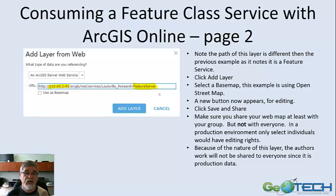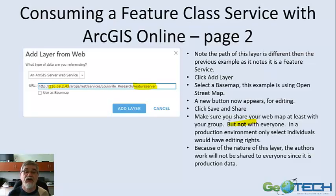Some things to do: click to add layers, select a base map — we're using OpenStreetMap here — a new button will appear, then click save and share. Be careful who you share this to. Do not share it to everyone, because that would give everybody with an account the ability to make edits to your service. You would have a very small group that you'd give editing ability to. Other people you'd give the ability to read by using a map service of the same layer. You would have clicked both a feature service and a map service — for viewing use the map service, only the feature service is used for editing.